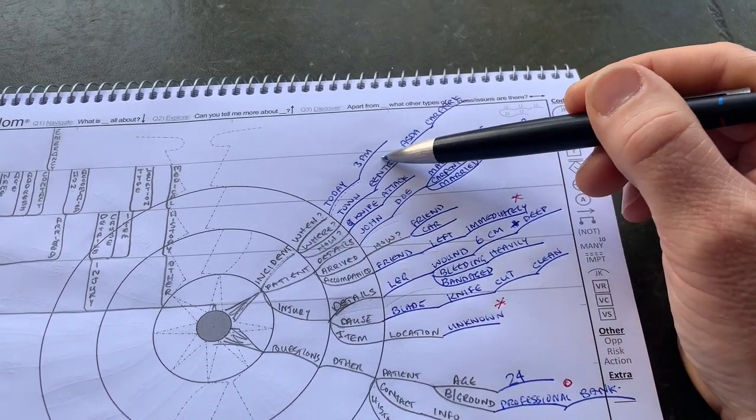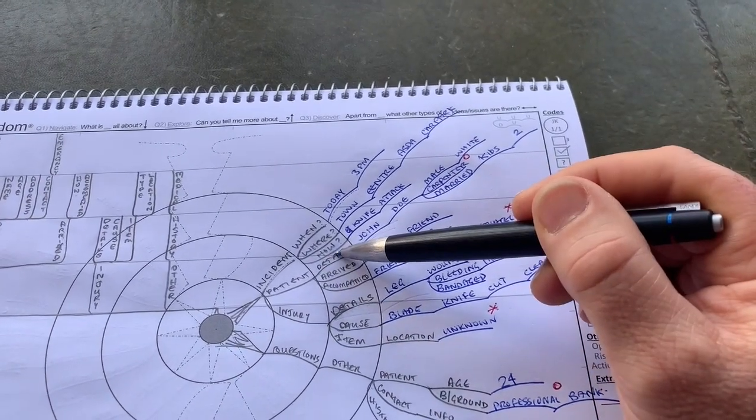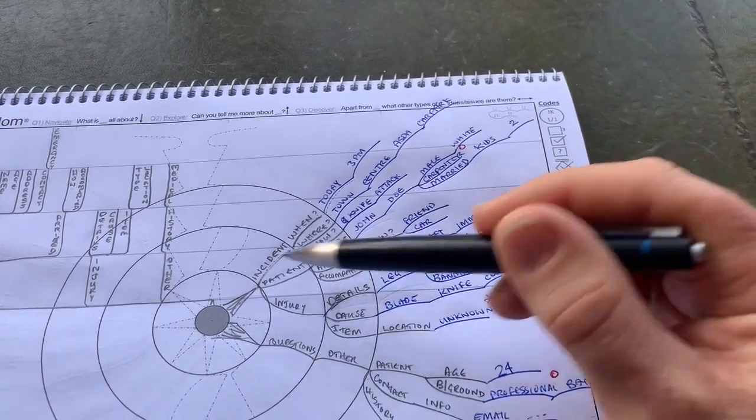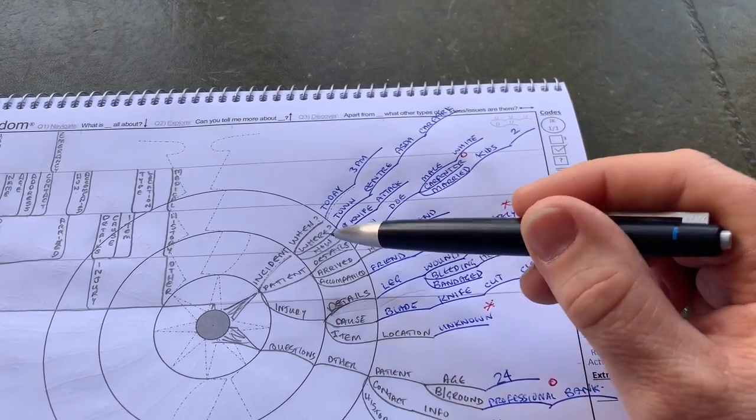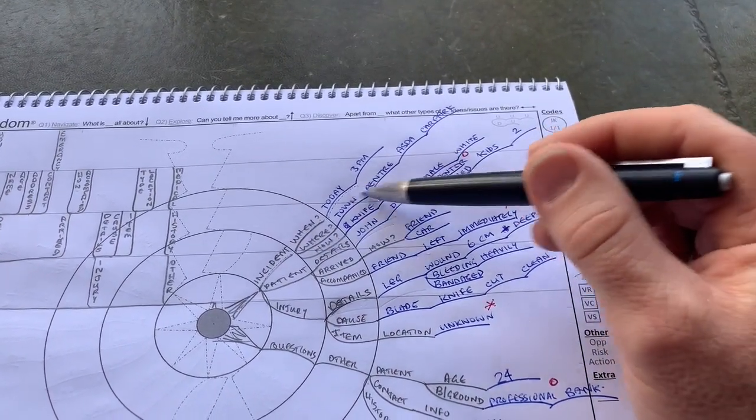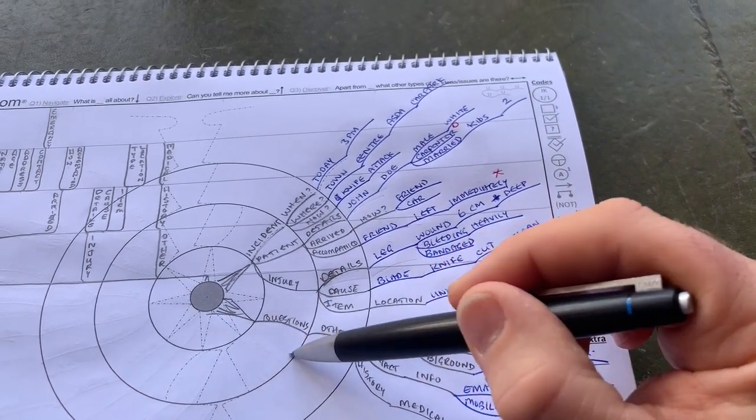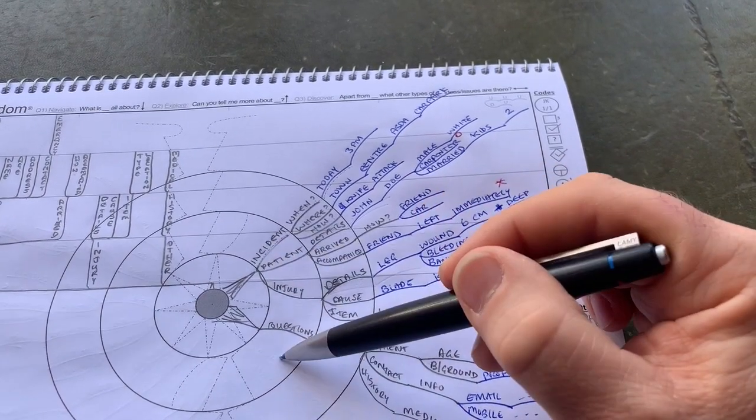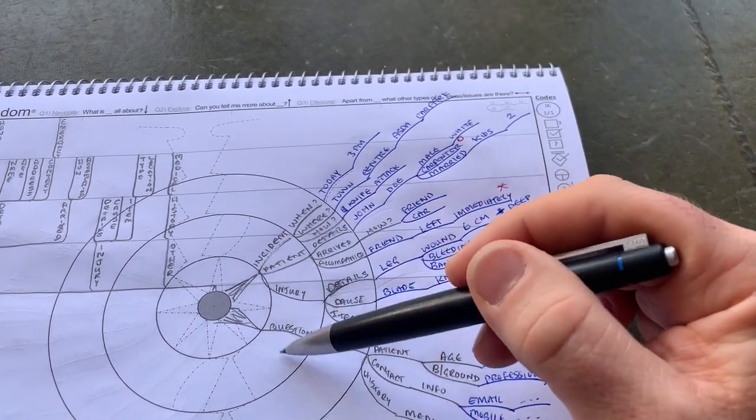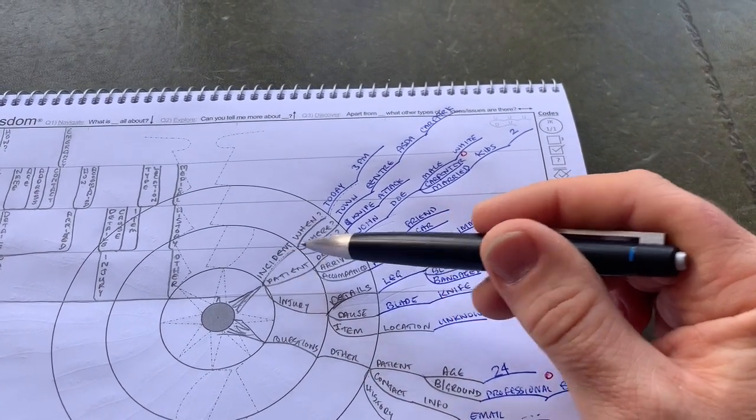When did the incident happen? Today at 3pm. Where? In the town centre in the Asda car park. How did it happen? It was a knife attack. Now if I want to know more information about the incident I can either capture the information by building on it here or I can create a new branch down here called incident and keep going. At a glance I can see I've got more than one source of information on the incident.